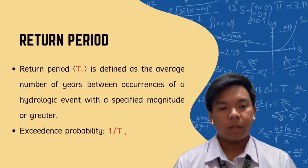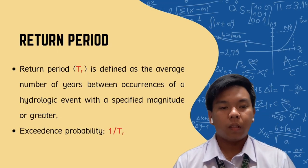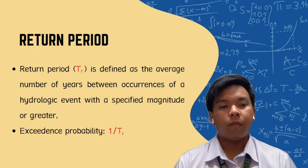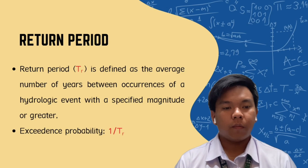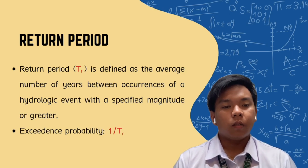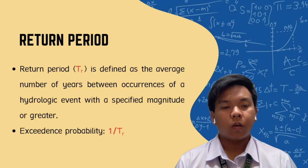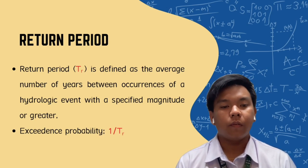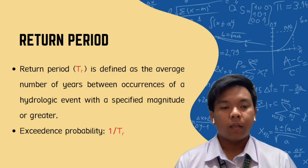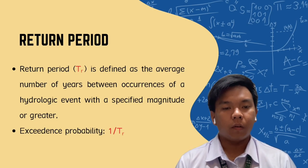The return period, T-sub-r, is defined as the average number of years between appearances of a hydrologic event with a specified magnitude or greater. It is basically the time frame in which hydrologic events happen again with the same or even greater magnitude. The exceedance probability is 1 over T-sub-r, or 1 over the return period.